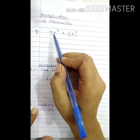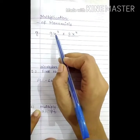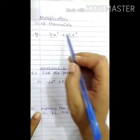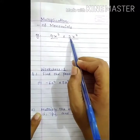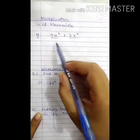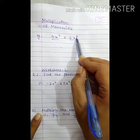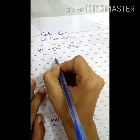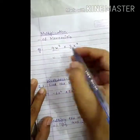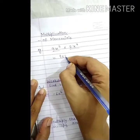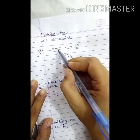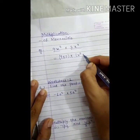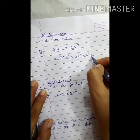For example, here we are given two monomials. First is 9x³ and second is 2x⁴. We have to multiply these two monomials. So, the method is, first of all, we multiply the constants: 9 × 2. Then, we multiply the variables: x³ multiply by x⁴.